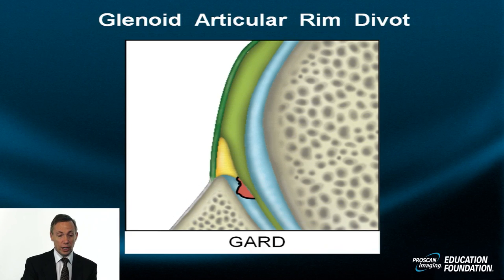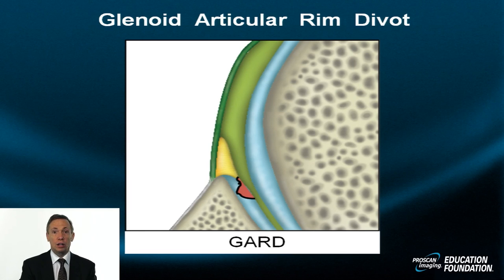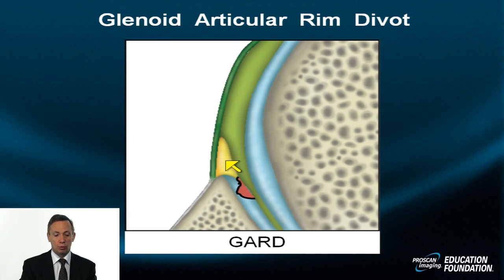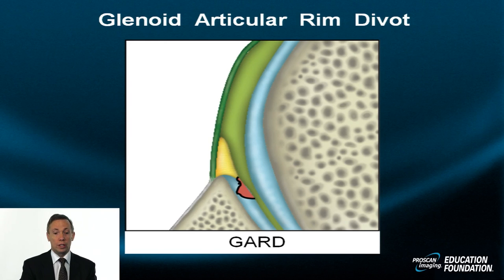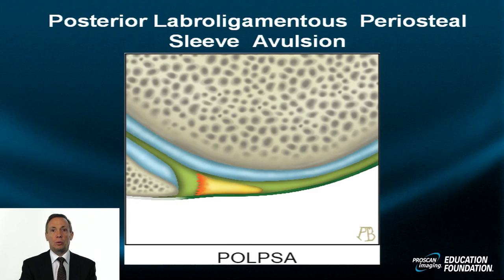The GARD lesion — glenoid articular rim divot or guard lesion — is a focal, predominantly hyaline cartilaginous divot at the base of the fibrocartilaginous labrum with little involvement of the labrum itself. It occurs at the base of the labrum but may also occur a little more posteriorly, and is sometimes associated with a free body lying within the joint.